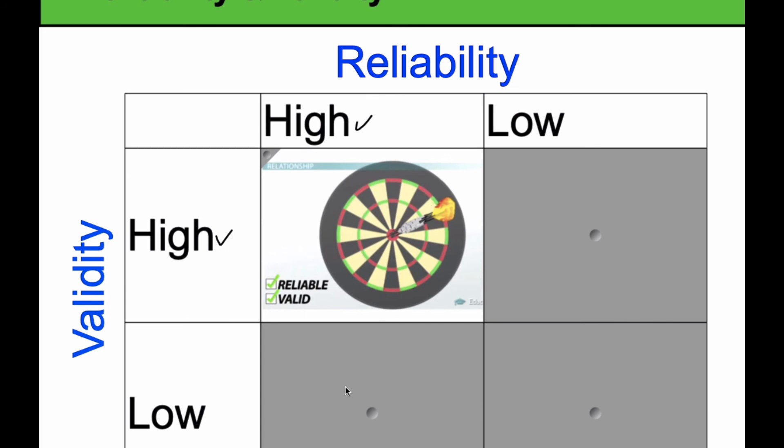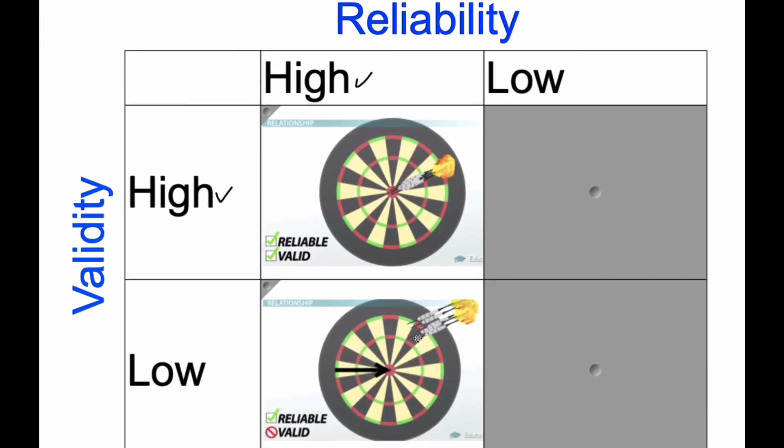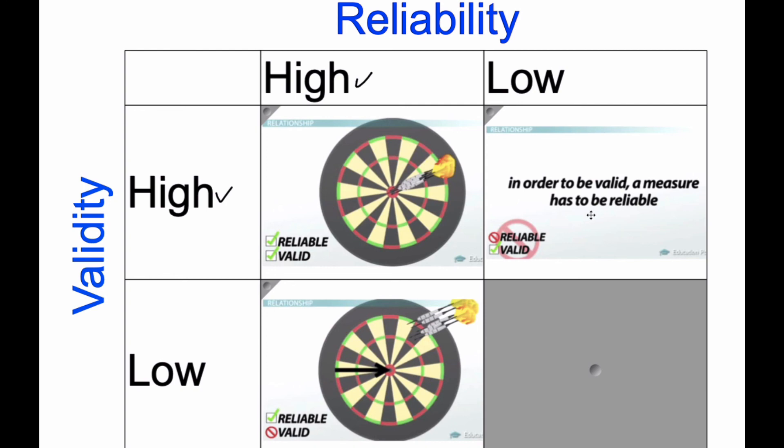If the reliability is high and the validity is low, well, we're trying to hit the target. What happens is we're reliably always hitting up here, so it has high reliability, but my validity is measuring the wrong thing. So there's high reliability, low validity. If we consider high validity low, well, this is impossible. In order to be valid, a measure first has to be reliable. So having a high validity and a low reliability is impossible.